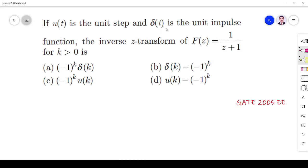The question is: if u(t) is the unit step and delta(t) is the unit impulse function, the inverse z-transform of F(z) = 1/(z+1) for k greater than 0 is given by...